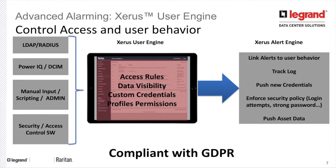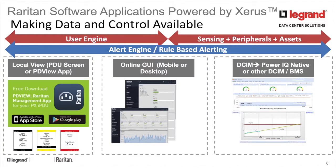The Xerus user engine allows a user to access the platform via industry standard security methods like existing Active Directory, LDAP, or RADIUS authentication. We can have integration through DCIM packages. There can be scripting, and all of this allows the engine to track everything, including pushing asset data to a DCIM software.